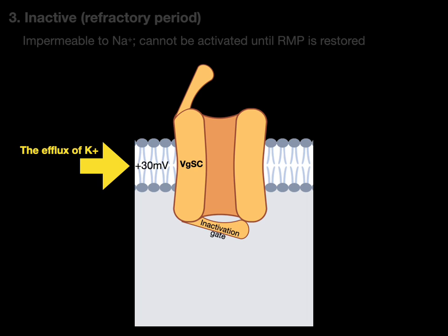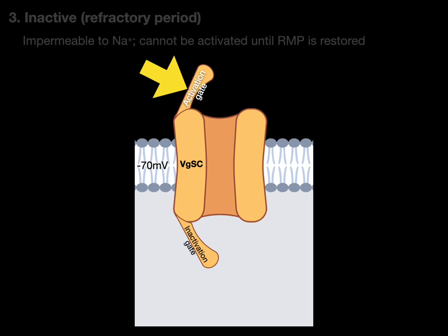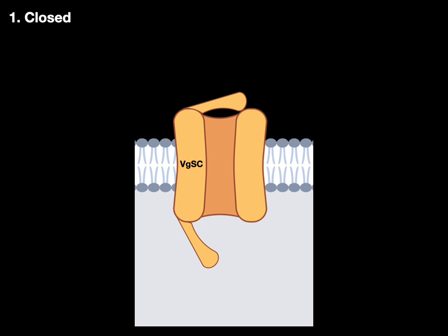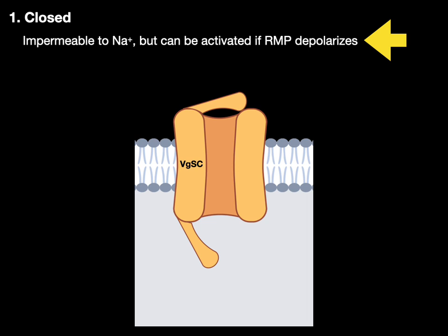In review: the efflux of potassium repolarizes the membrane back to -70 millivolts. When that occurs, the inactivation gate opens and the activation gate closes — returning the channel right back to the first conformational state. The voltage-gated sodium channel is closed and impermeable to sodium, but it can be activated again if the resting membrane potential depolarizes. The cell is at rest.